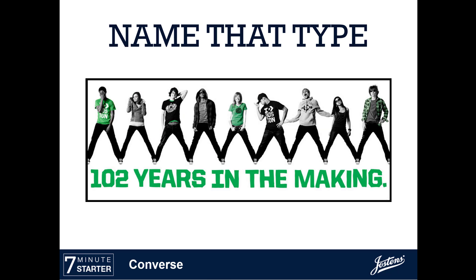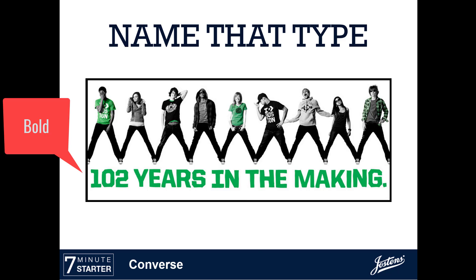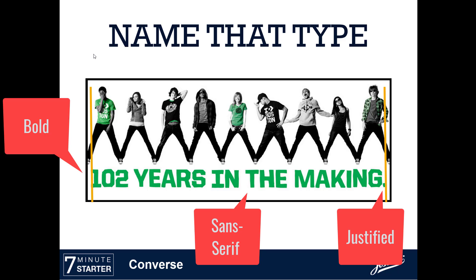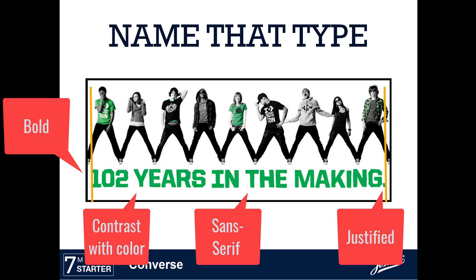Looking at this poster, I'm identifying the font on '102 Years in the Making.' I see a very bold font, and it is sans serif because there are no little feet at the bottom of the T's, H's, or E's. You could also call it a block type or decorative font. It would be justified because the text goes all the way to the left and right of the picture. There's no leading since there aren't multiple lines of text, and we see contrast in our font color pulled from the green of their shirts.